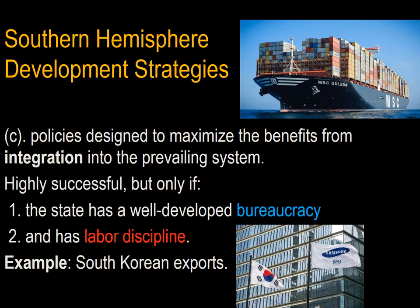A third development strategy was to maximize the benefits from integration into the prevailing system. This is highly successful and was done by states like Singapore, Hong Kong, Taiwan, South Korea, and Japan, and is essentially the key to China's success and the growing success of India. However, it only works if the country has a well-developed bureaucracy essentially free from corruption and there is labor discipline — meaning economic productivity is not disrupted by labor strikes.